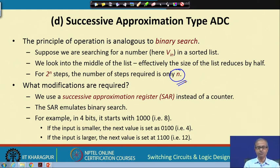What modifications are required? Earlier we used a counter — either an up counter or an up-down counter. Here we use a modified version called a successive approximation register, which simulates this binary search in hardware. Let us take an example of a 4-bit successive approximation register. We start by making the most significant bit 1, that means 1000. In decimal, 1000 is 8, and we have a range from 0 to 15, so 8 represents approximately the middle point.